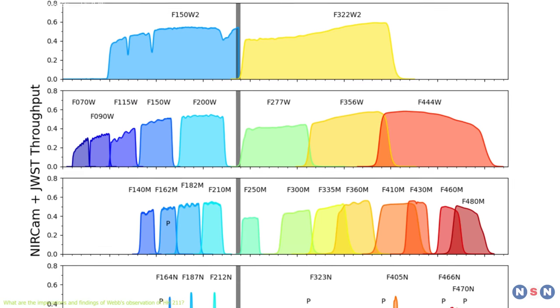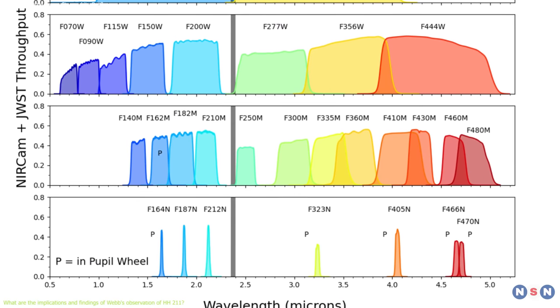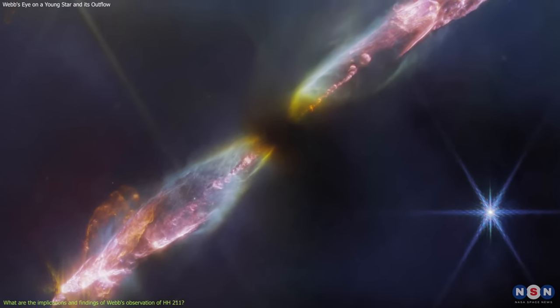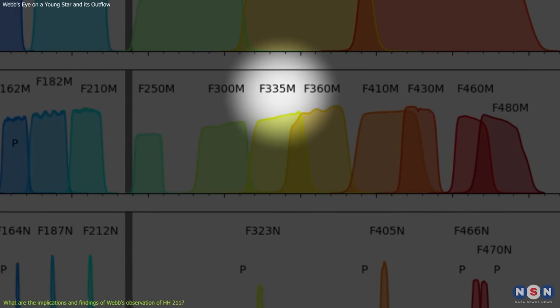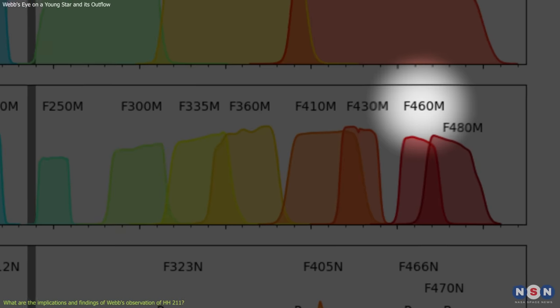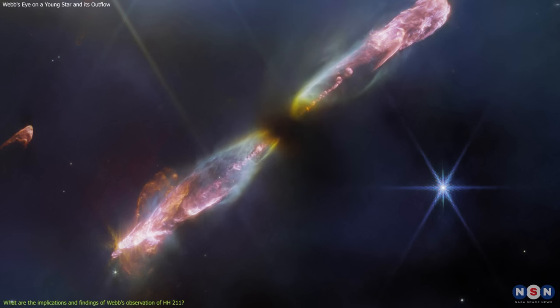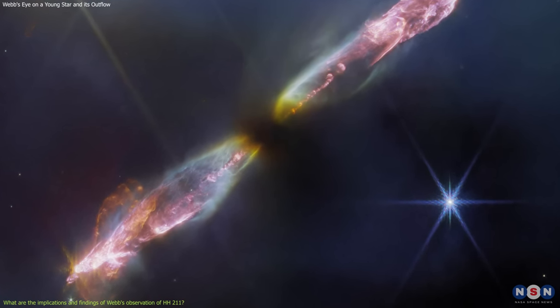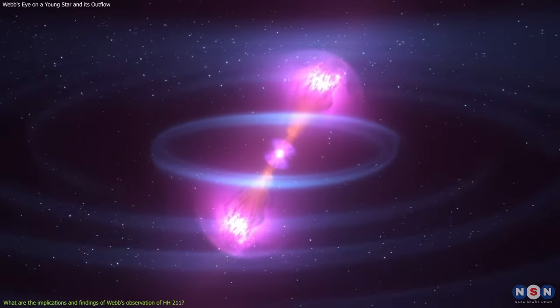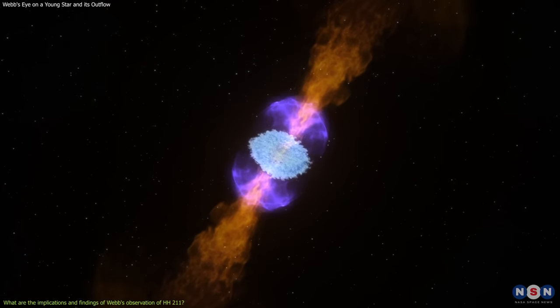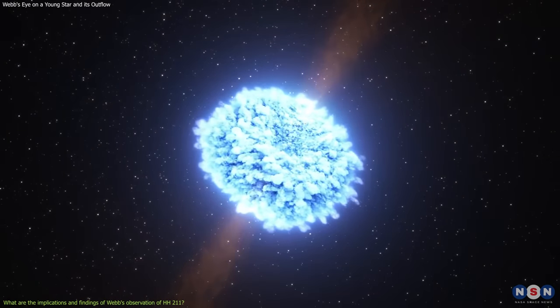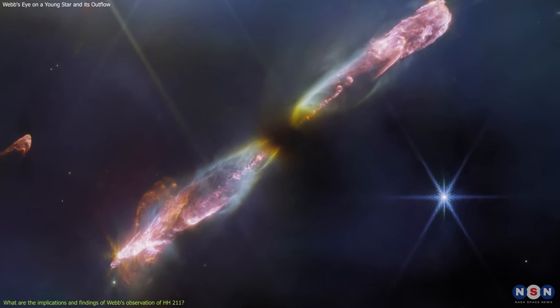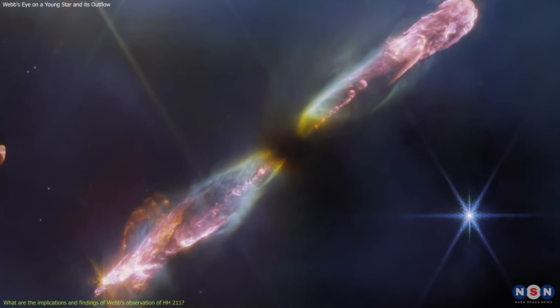Each module has nine filters that can select different bands of infrared light for observation. This image was taken using the longer wavelength module with two filters, F335M at 3.35 micrometers, and F460M at 4.60 micrometers. These filters were chosen because they can detect infrared light emitted by molecules in the outflow, such as water and carbon monoxide. These molecules are excited by the shock waves and radiate infrared light at specific wavelengths corresponding to their energy levels. By measuring the intensity and distribution of this light, Webb can map out the temperature, density, velocity, and composition of the outflow.